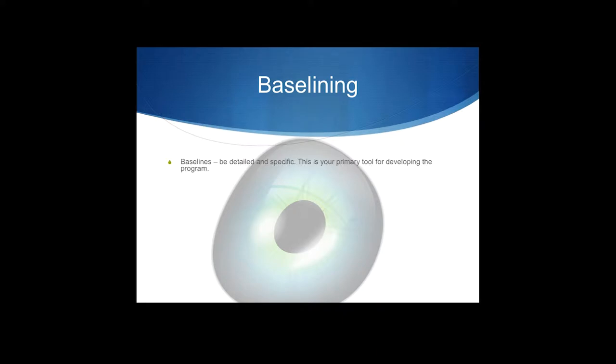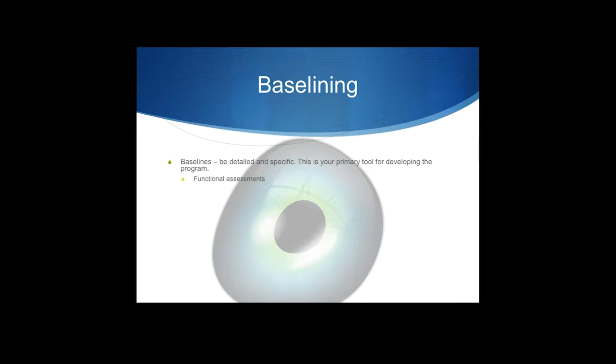We're going to zip through baselining because we already covered it. The idea is to be detailed and specific — this is how you develop the program. In a good functional assessment, you're looking for the ABCs: the antecedents, the behaviors, and the consequences. You write down almost everything you can in gory detail about what's happening with the behavior, and then go back later and analyze it.